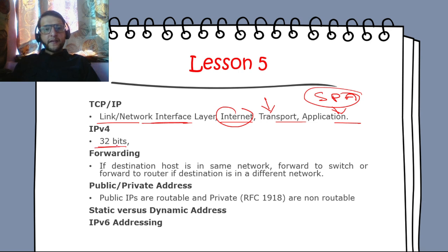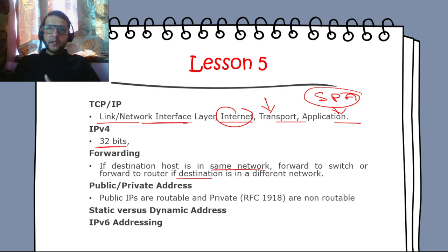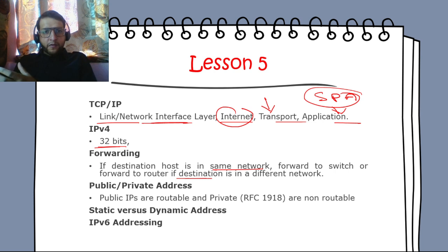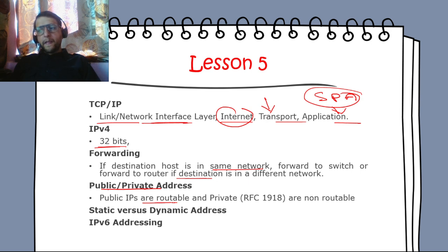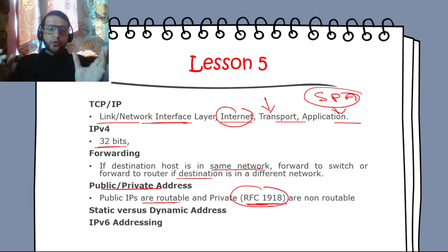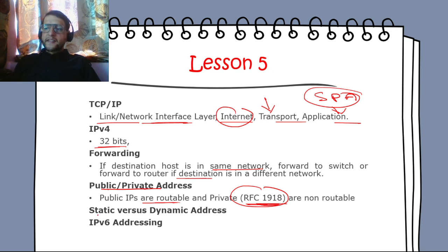IPv4 is 32 bits, represented in dotted-decimal notation. If the destination host is on the same network, the packet is forwarded to the switch; if on a different network, it goes to the router (default gateway). Public IPs are routable; private IPs are non-routable and are defined in RFC 1918. IP addresses can be static (manually assigned) or dynamic (assigned by a DHCP server). IPv6 is 128 bits with additional features.